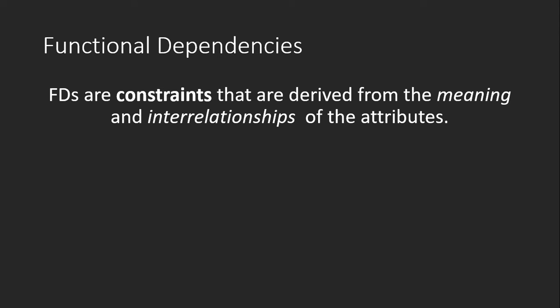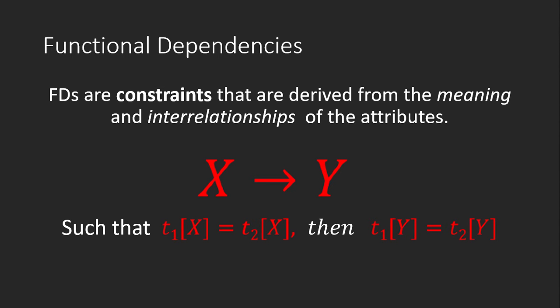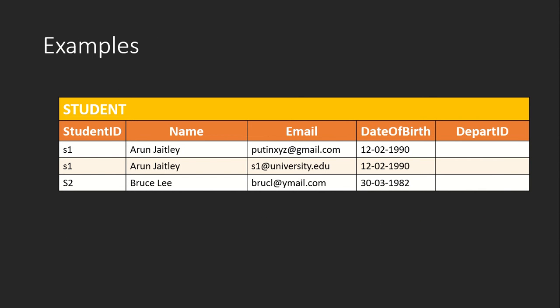Functional dependency is represented in this form: X to Y, such that for two tuples T1 and T2, if T1 of X equals T2 of X — that means if there are two tuples T1 and T2 which have the same value of X — then T1 and T2 must have the same value of Y.